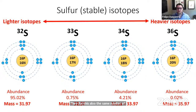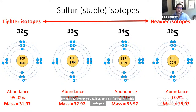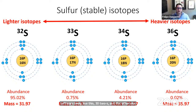Isotopes differ in their mass and therefore their physical properties, but not their chemical properties. They also vary in their relative proportions, with some being predictable in space. Sulfur has four stable isotopes: 32S is the most abundant at about 95% of abundance, and 34S, which is heavier and less abundant, is the one we work a lot with. The other two forms are not very common.